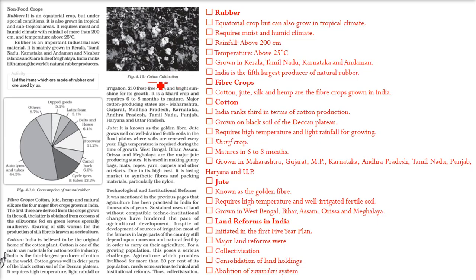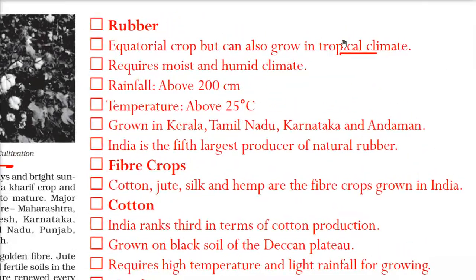If you see, this is an example of cotton cultivation. Rubber is an equatorial crop, but it can also grow in tropical areas with a tropical climate. It is a plantation crop that requires a moist and humid climate, with rainfall of about 200 centimeters and temperature of about 25 degrees centigrade. That is why Kerala, Tamil Nadu, Karnataka, and the Andamans are the producers of rubber.